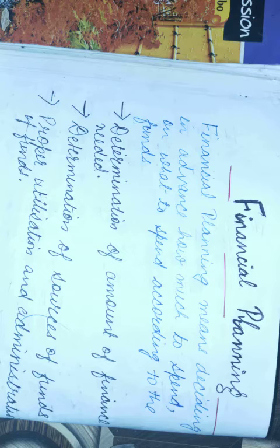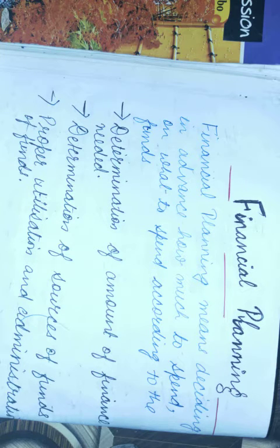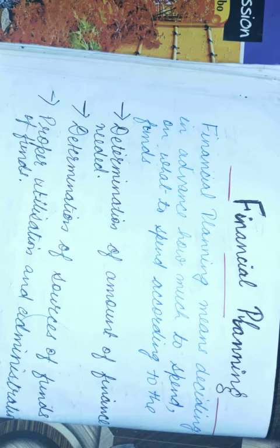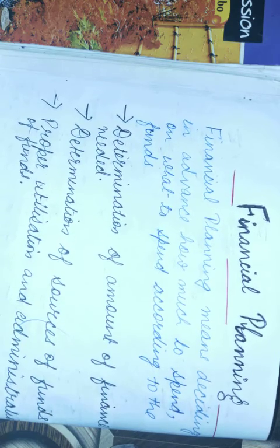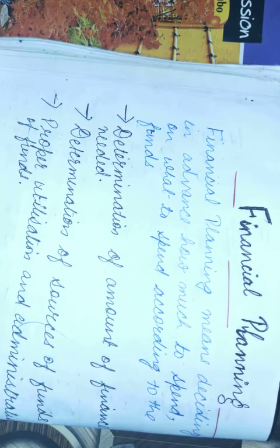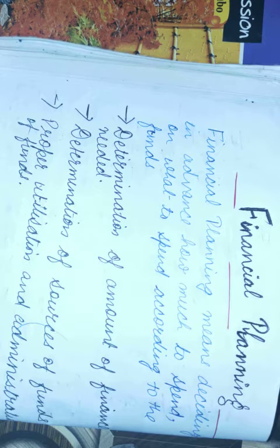We are doing chapter number 9 from part B and its name is financial management. In the last video we had discussed all the three financial decisions, which are very important for financial managers, and all the decisions are very essential as the organization's success or failure depends on their decisions. In today's video we are going to discuss financial planning — what is financial planning, what are the objectives of financial planning, and what is the importance of financial planning.